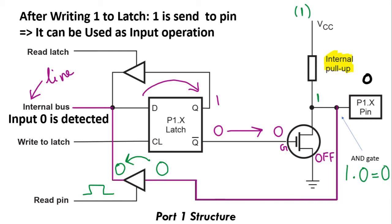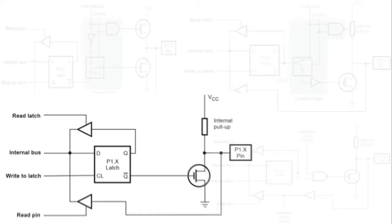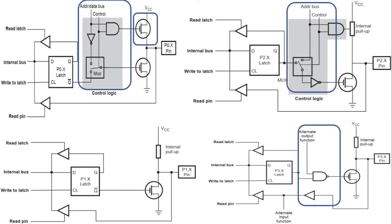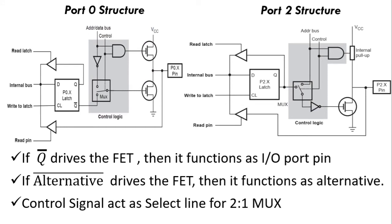This is common to all other ports. Port 0 is used to give address out of the IC. The address lines are 16 pins, so I need 2 ports. The data is 8 bits, so 8 bits are assigned to a port. Port 0 was selected. Q bar drives the FET for input-output operation. If the alternative signal drives the FET, then it functions as an alternative function.